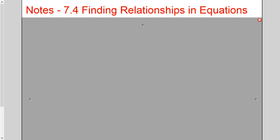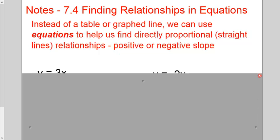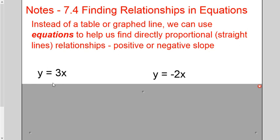What if I just gave you some sort of equation? Would you be able to tell me if it has a positive or negative slope? For this lesson, I'm only going to give you directly proportional equations and teach you exactly where to look. To determine if an equation is positive or negative, look at the value right in front of the x — the number multiplying it. If it's a positive number, the equation has a positive slope.